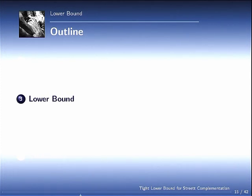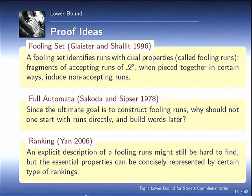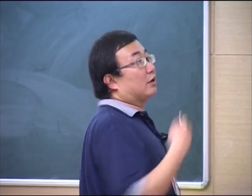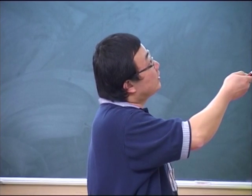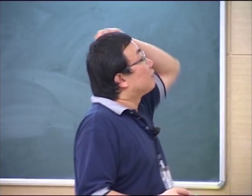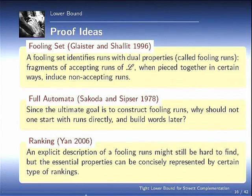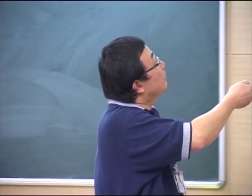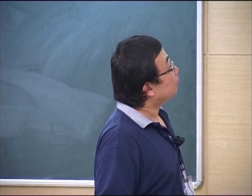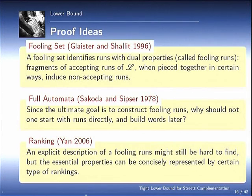Now it's time to talk about the lower bound, and it's based on the synthesis of three proof ideas. The first one is called the fooling set. I'm sure this concept has been used and appeared much earlier, but in 1996 we found this paper gave a good presentation. A fooling set basically identifies certain runs with dual properties, and we call them fooling runs. And when they paste these runs together in certain ways, it can induce non-accepting runs. In the next slide, we will talk about each one in detail.